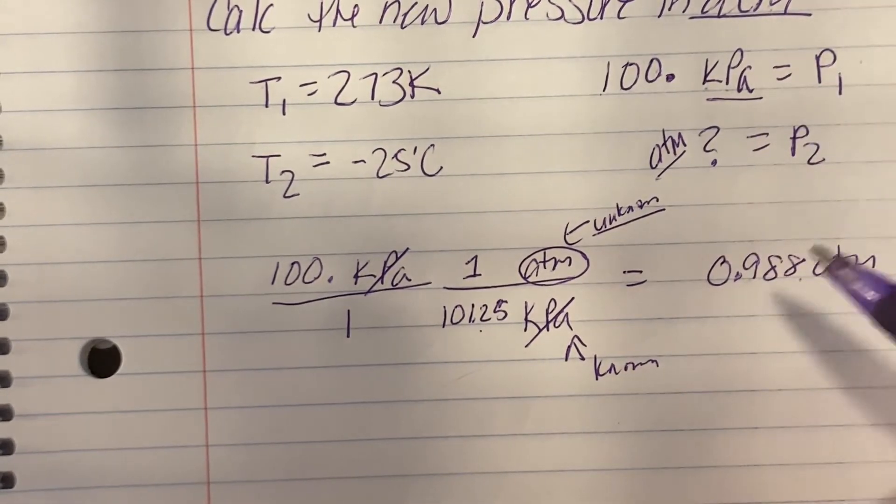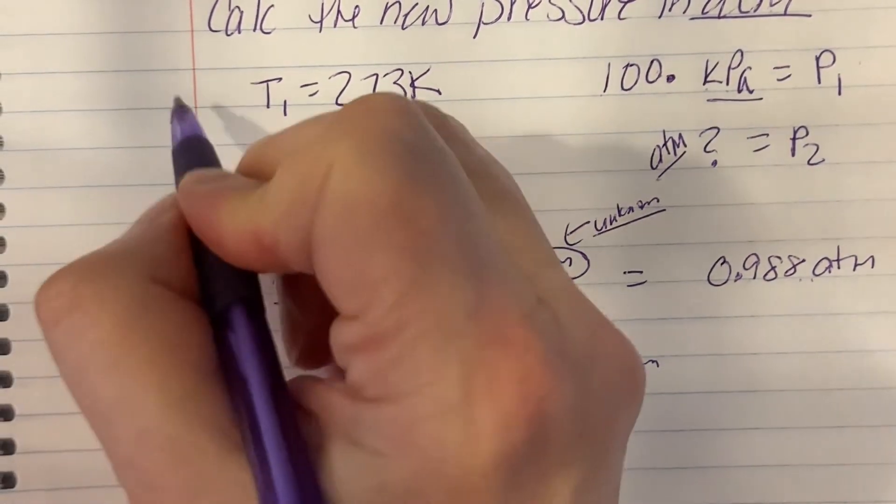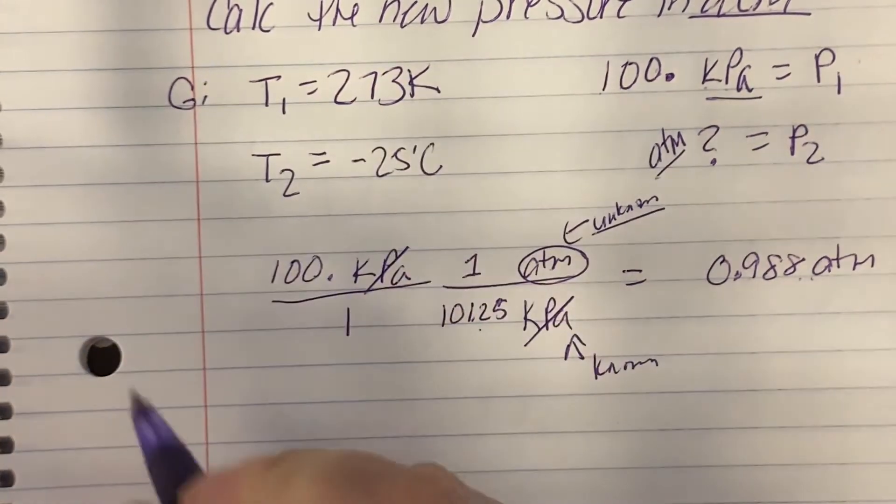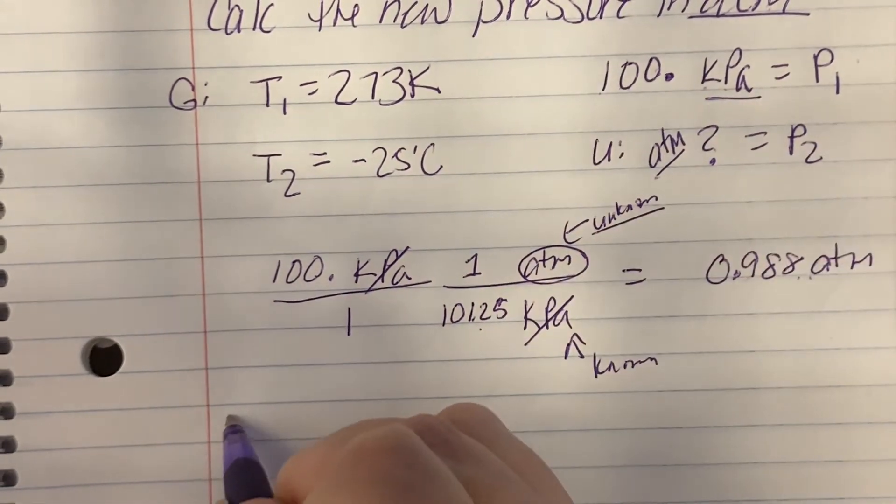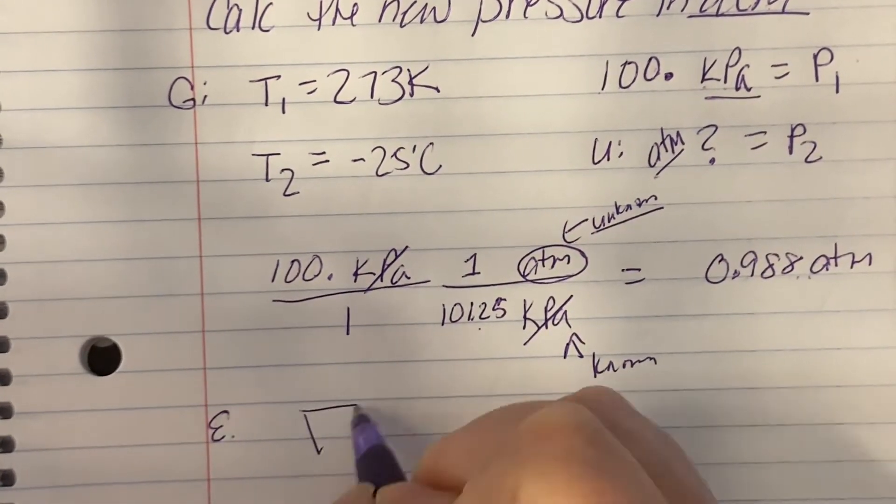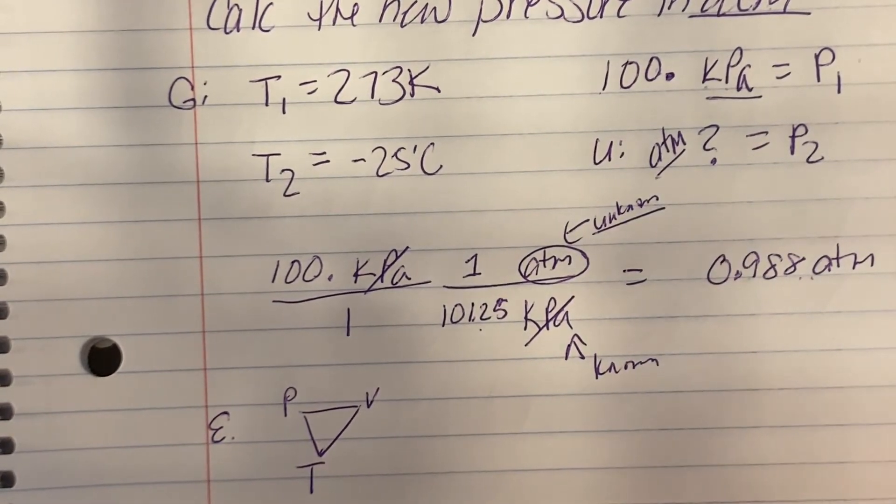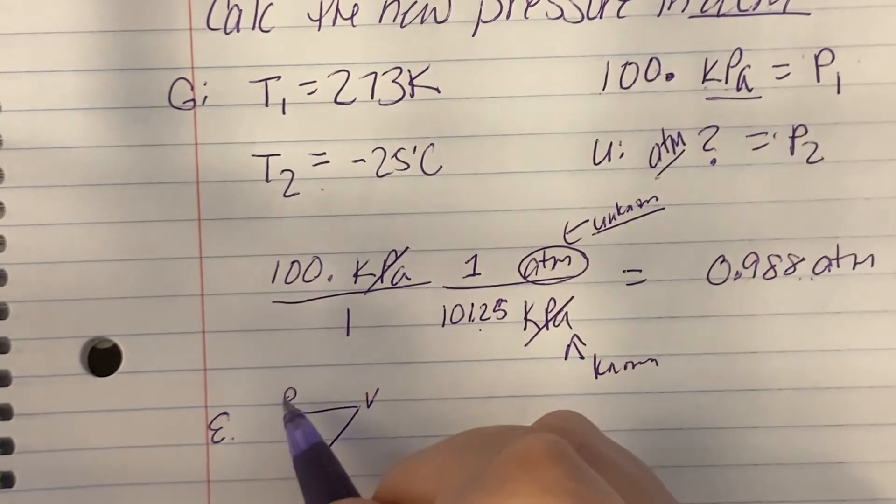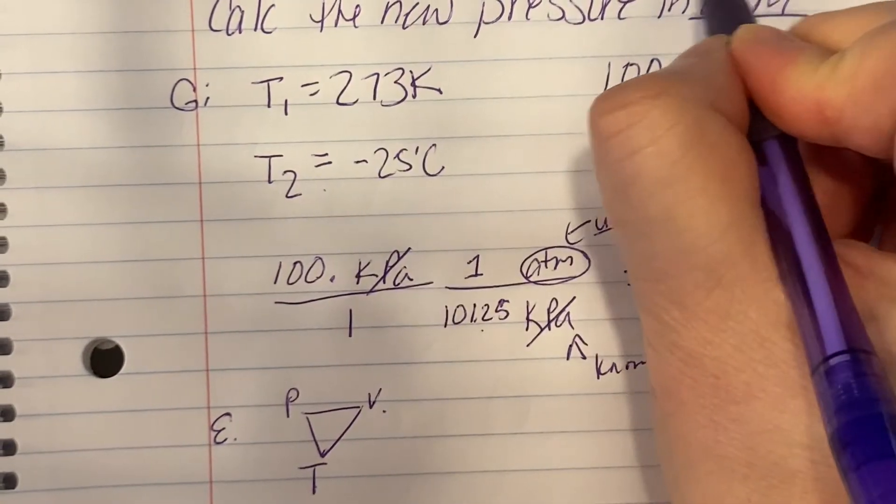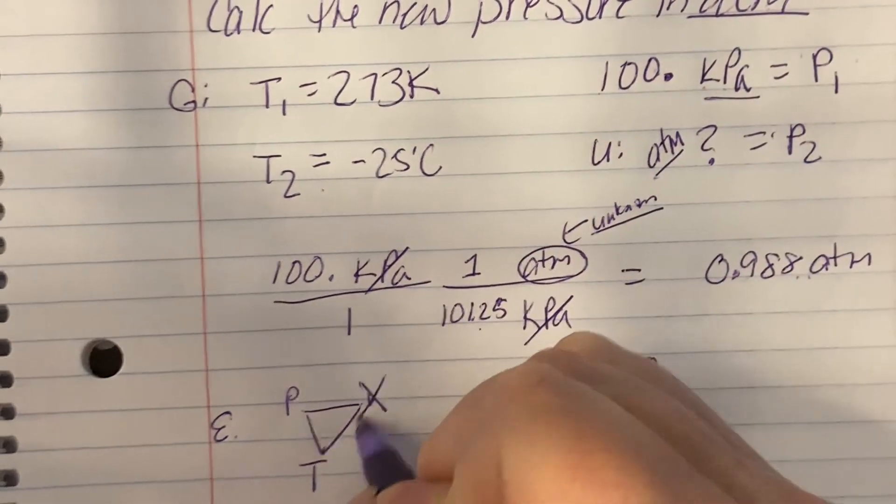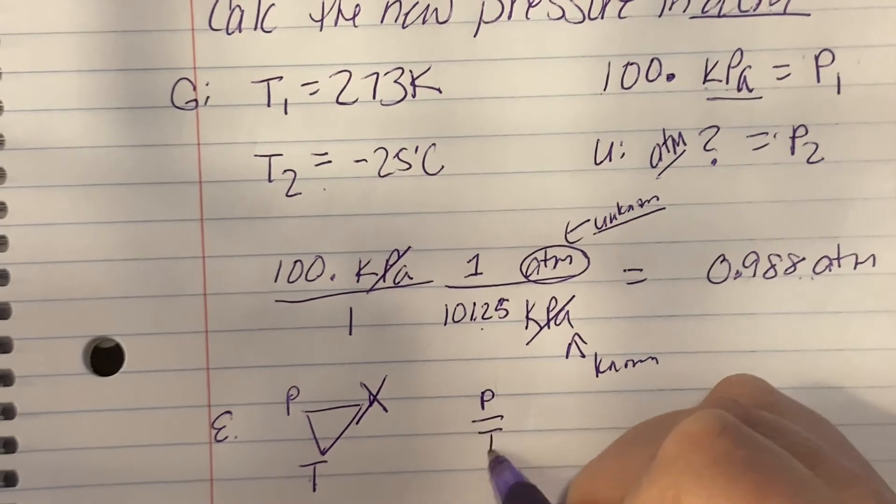I don't know my equation. I've only done my givens and my unknown, so now I have to find my equation. So I use that gas triangle, PV over T. And what do I have? I have T's and P's. Any volume? Nope. Volume is constant, so we don't have to worry about it.